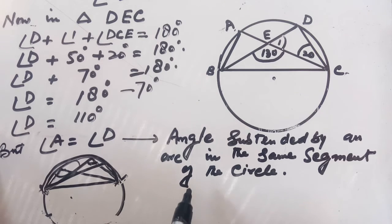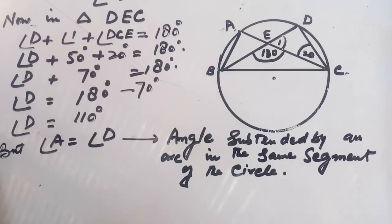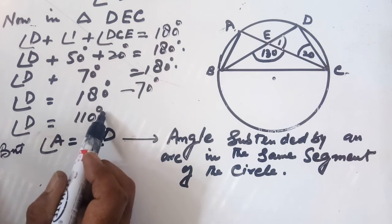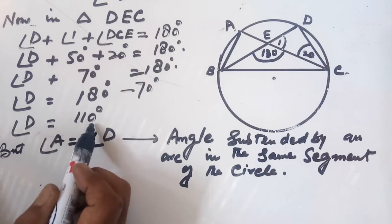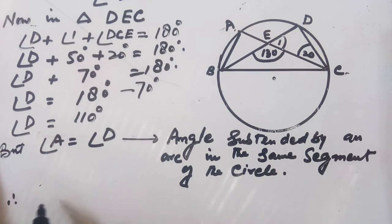The arc and the same segment are on the same side of the circle. Therefore, angle A equals angle D, which is 110 degrees.